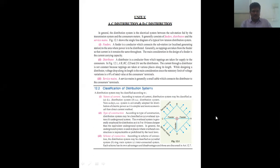I talked about transmission distribution, first the AC distribution and DC distribution. In general, the distribution system is the electrical system between the substation fed by the transmitting system and the consumer's network. It generally consists of feeders, distributors, and the service network, as shown in the single line diagram of vertical primary distribution.